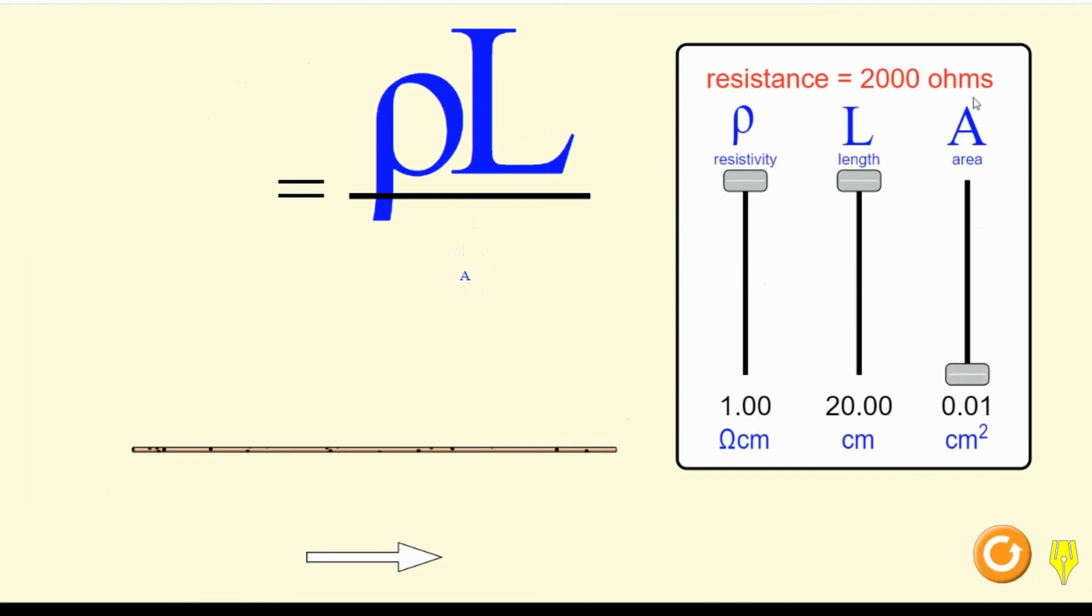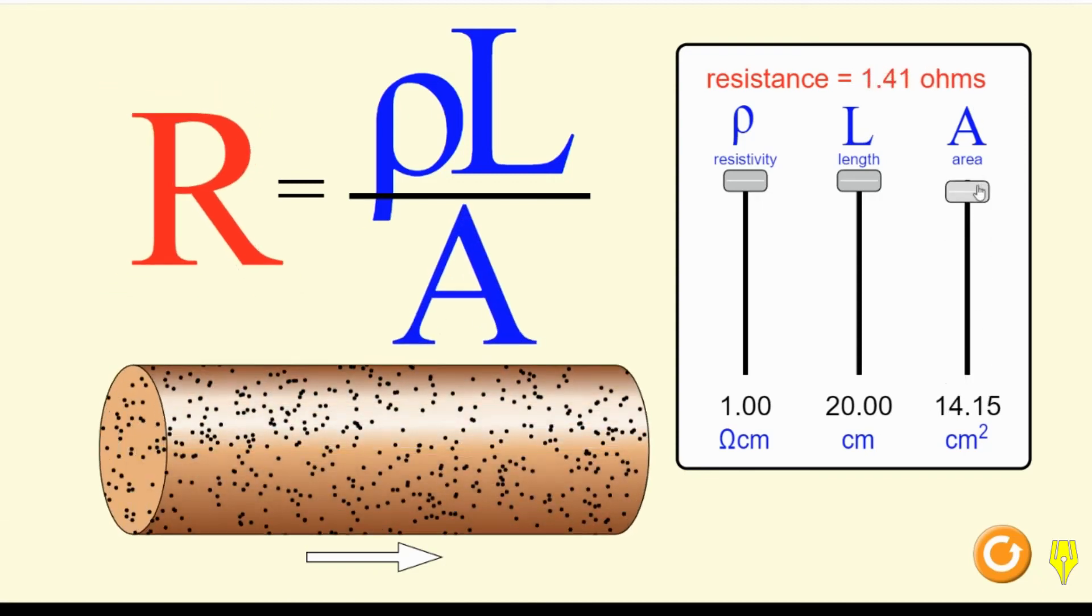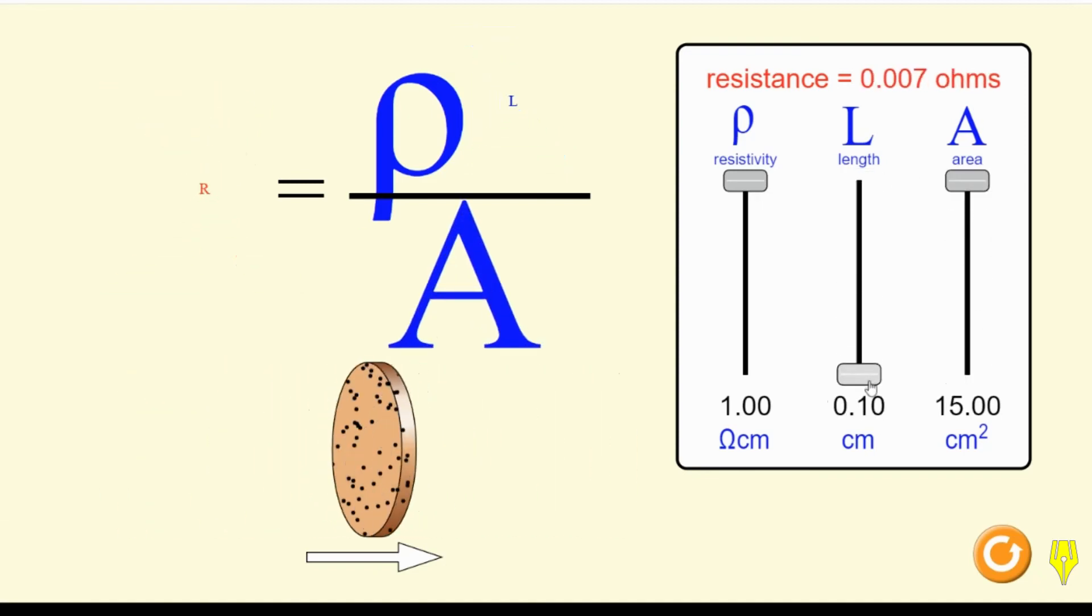For the highest resistance, resistivity and length must be highest and the area must be lowest. Similarly, the shortest length and thickest conductor will give the lowest resistance.